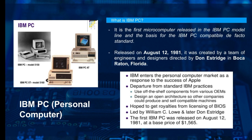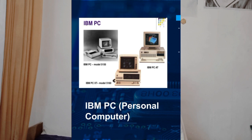IBM entered the personal computer market as a response to the success of Apple. In a departure from standard IBM practices, it used off-the-shelf components from various OEMs and designed an open architecture so other companies could produce and sell compatible machines. IBM hoped to get royalties from licensing of BIOS, led by William C. Lowe and later Don Estridge. The first IBM PC was released on August 12, 1981, at a base price of $1,565, with model number IBM 5150, in an attempt to set an industry benchmark.